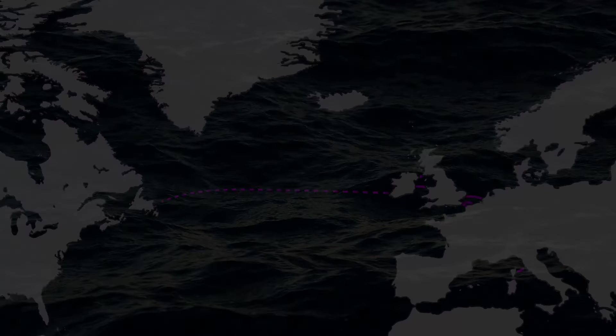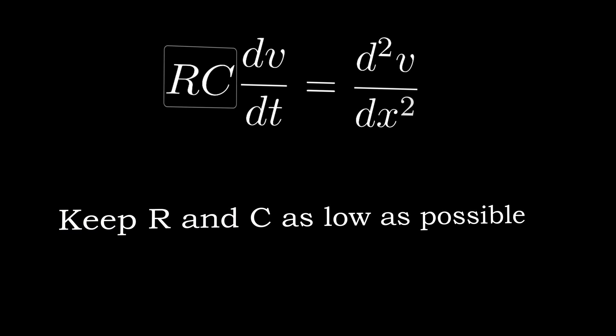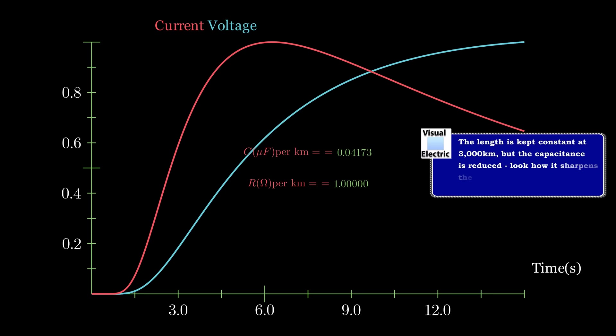But as we've seen, Thomson's analysis has shed light on the fact that the resistance and capacitance of the transmission line have a fundamental impact on the dispersion. Put simply, you want to keep the resistance and capacitance as low as possible to minimise the delay to the peak of the current pulse.